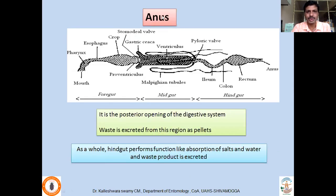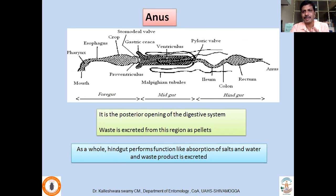The last posterior part of the insect digestive system is the anus. In terrestrial insects, waste is excreted as pellets, whereas in many sap-sucking insects the excreta may be liquid or semi-liquid. Overall, the hindgut performs functions including absorption of salts and water, and complete excretion of waste products.